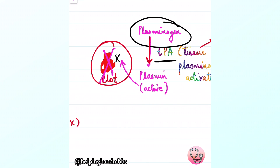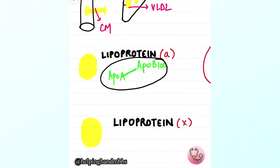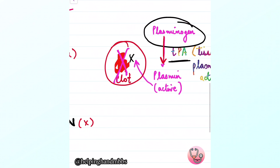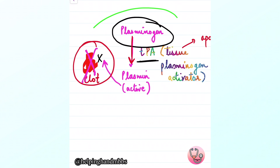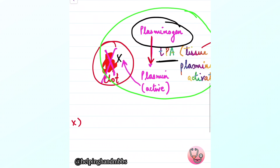Since plasminogen is not converted to plasmin, clots are not dissolved, leading to unnecessary clot formation — thrombosis. Lipoprotein(a) is therefore a very high risk factor for thrombosis, especially in the Indian population. High levels of lipoprotein(a) are associated with atherosclerosis and coronary artery disease.